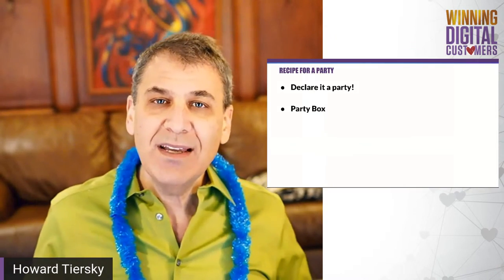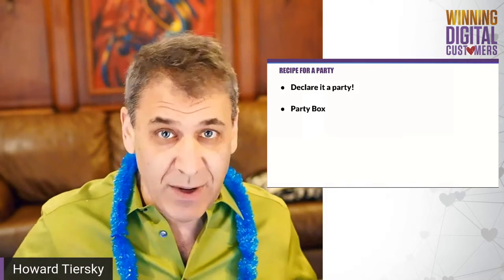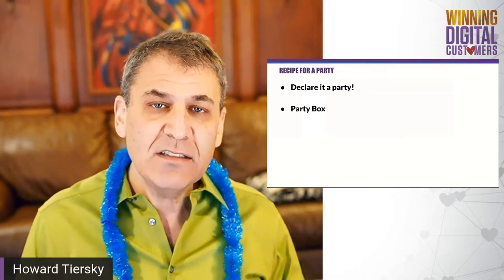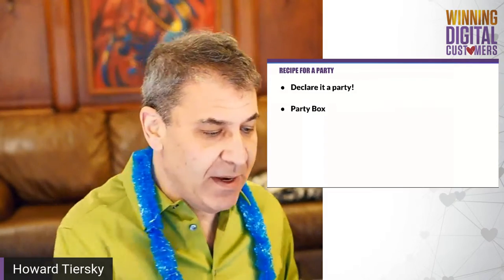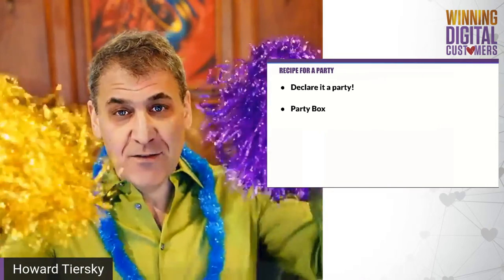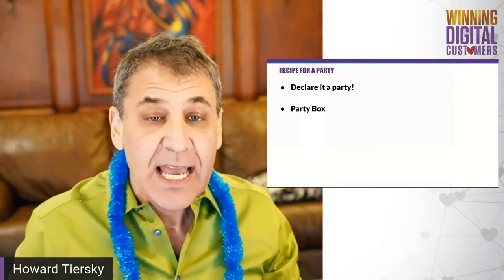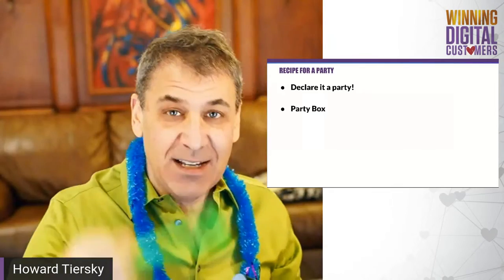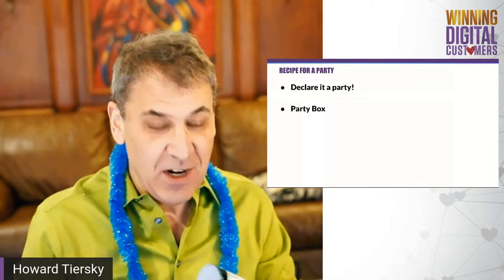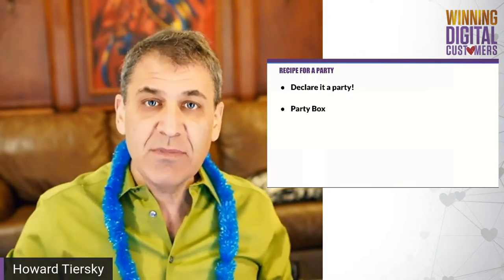Number two: send a party box. It's a box you send by FedEx or UPS or something like that — send something to participants in advance that gives them some tools they're going to use at the party. For example, you can get party hats on Amazon, like a bag of 12 for eight bucks or something. Someone gets a box in the mail with a hat like this and some pom-poms, maybe some snacks, and all of a sudden they think, 'oh geez, this is going to be a party.'